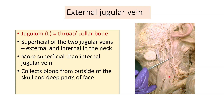The external jugular vein collects blood from outside the skull and from the deep parts of the face.